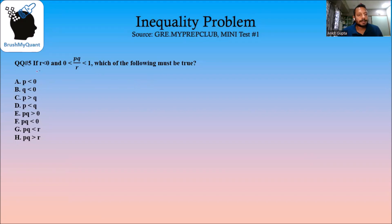It is given to us that r is a negative number because r is less than 0, and pq divided by r lies between 0 and 1. We have to tell which of the following must be true.